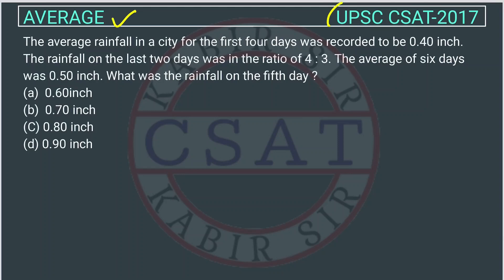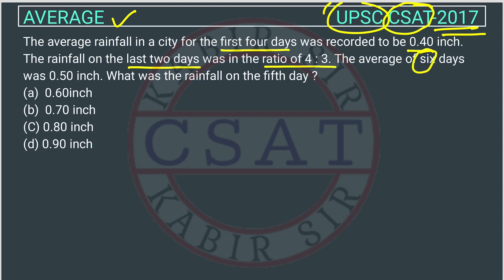This is a question on averages asked by UPSC in the CSET exam 2017. The average rainfall in a city for the first four days was recorded to be 0.40 inches. The rainfall on the last two days was in the ratio of 4 is to 3. The average of six days was 0.50 inches. What was the rainfall on the fifth day?